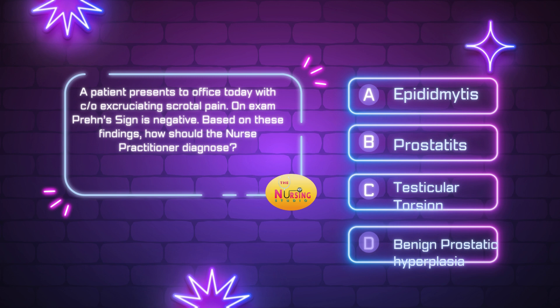I always tell you guys to read the stem of the question first to ensure that you're actually answering what they're asking. We can start to create our own storylines that sometimes lead to careless mistakes. So read that stem, slow down, and make sure you understand what's being asked. Here, the stem of the question states: based on these findings, how should the nurse practitioner diagnose? If they're asking you how to diagnose, you need to go look back at the assessment — how is the patient presenting and what have we established on exam.